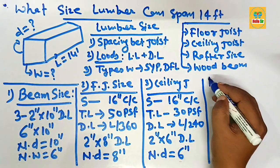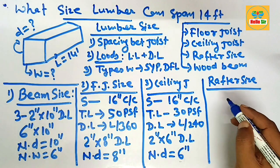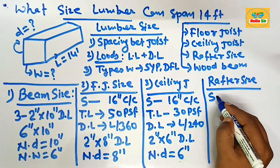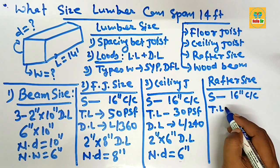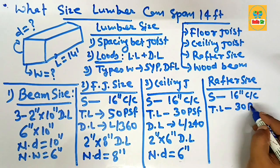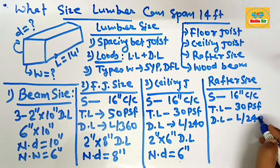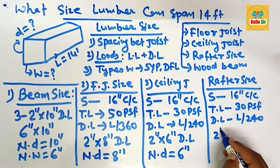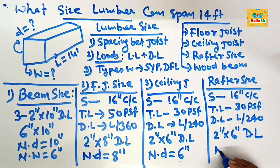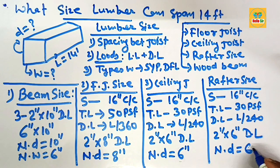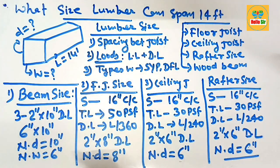For the rafter size required to span 14 feet, the conditions are similar: spacing of 16 inches on center, a total load of 30 pounds per square foot consisting of live load and dead load, and a deflection limit of L/240. You can use 2-inch by 6-inch dimensional lumber as the rafter. These are the different lumber sizes that can span a 14-foot distance.